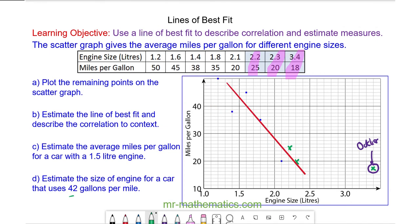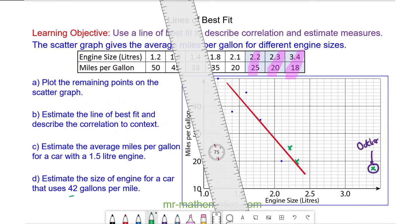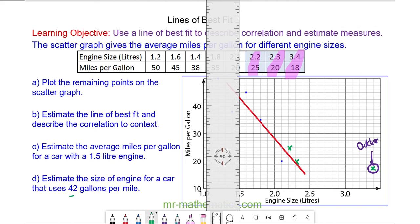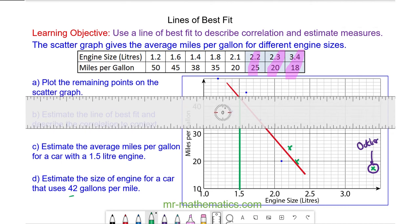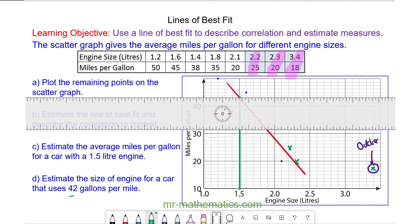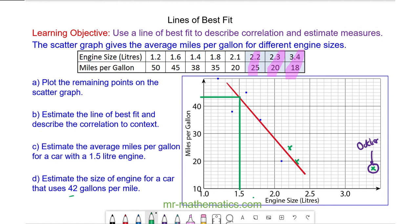For question C, estimate the average miles per gallon for a car with a 1.5 litre engine. We can draw a vertical line at 1.5 litres, then a horizontal line from where it crosses the line of best fit. You can see this is likely to be 44 miles per gallon.